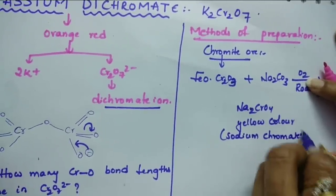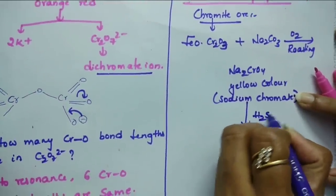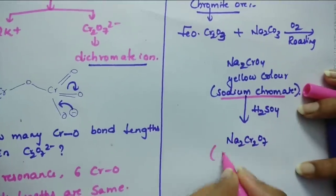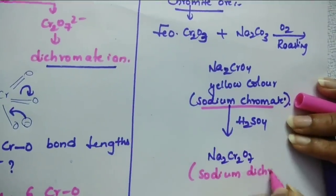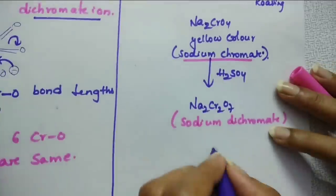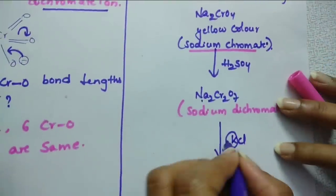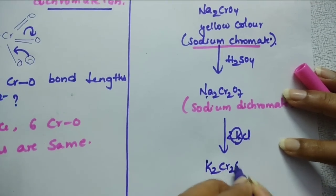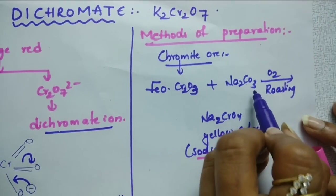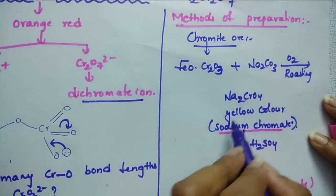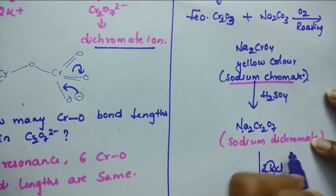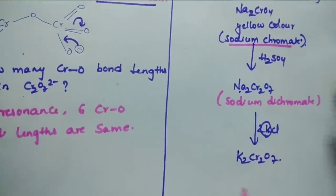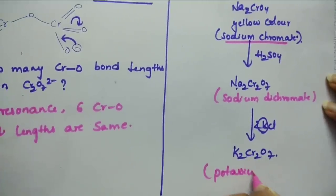This sodium chromate in the presence of acidic medium like H₂SO₄ converts into Na₂Cr₂O₇. What is this? This is sodium dichromate. This sodium dichromate is made to react with KCl. Potassium is more reactive than sodium, and this potassium replaces the sodium from the sodium dichromate and we get K₂Cr₂O₇. So chromite ore reacted with Na₂CO₃ in the presence of air gives yellow colored sodium chromate; sodium chromate in acidic media gives sodium dichromate; sodium dichromate reacted with KCl gives potassium dichromate.